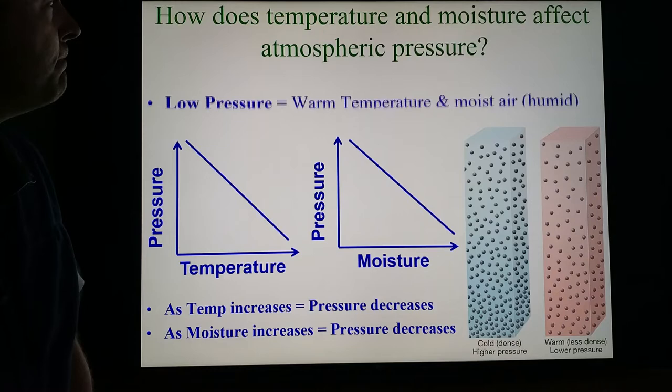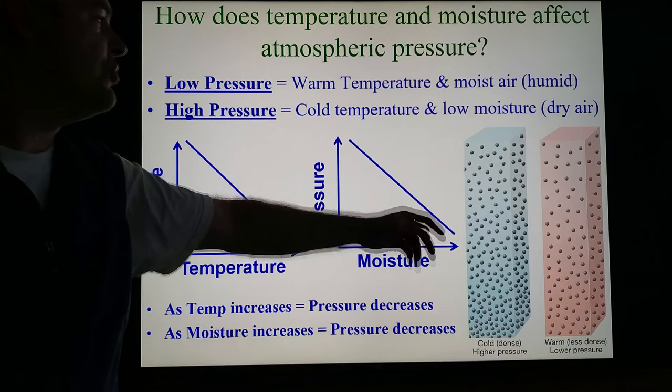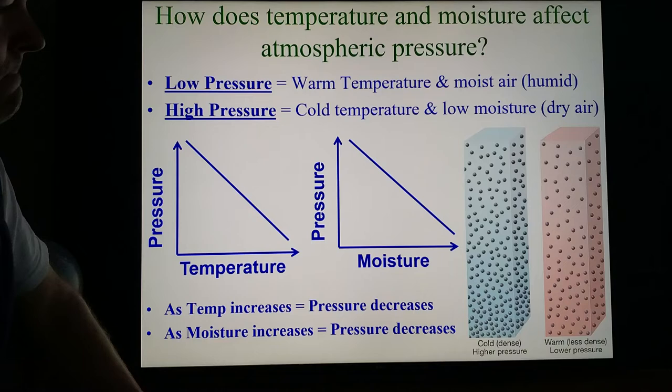Low pressure, warm temperature and humid air. We like to say low is wet and warm. That's referring to low pressure. And we like to say that high is dry and cool. High pressure is cooler temperatures and drier air.